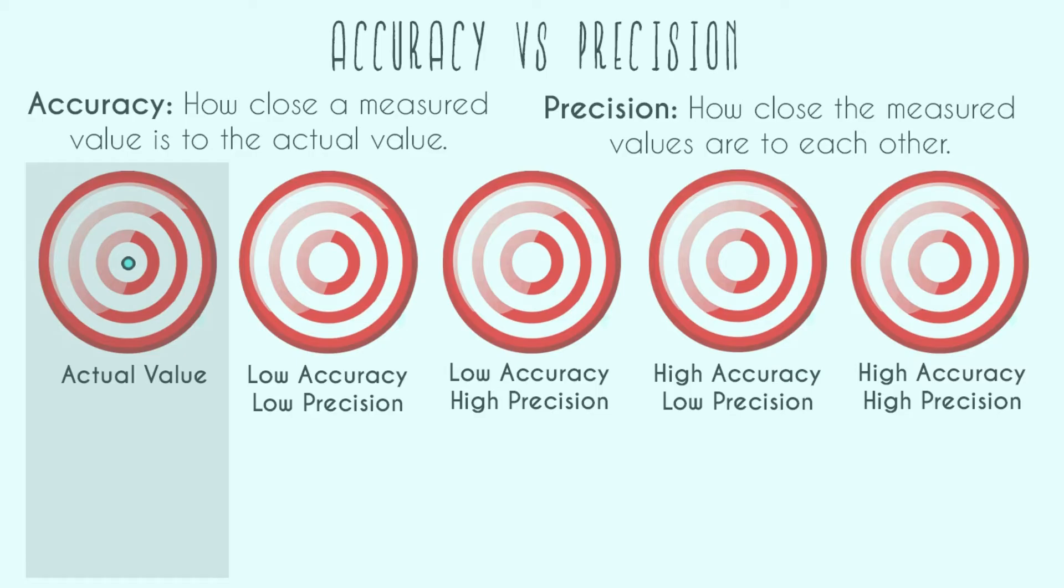Our first example is going to be low accuracy and low precision. So for low accuracy, that means that our actual tries are not close at all to the center. So maybe our four darts would end up like this. This was very, very inaccurate. We didn't get anything close to the bullseye.